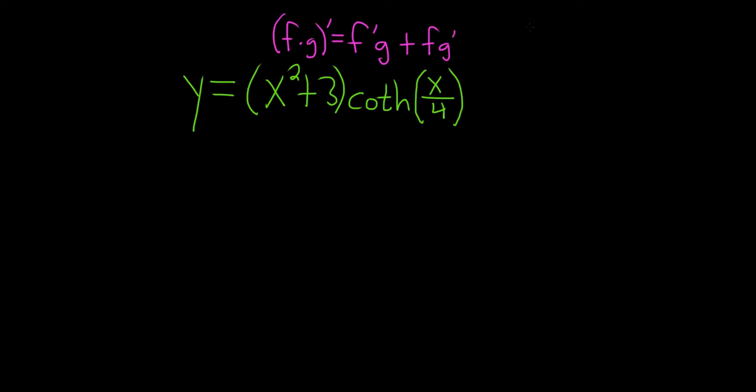Another formula we'll need in this problem is the formula for the derivative of the hyperbolic cotangent. The derivative of that is equal to negative hyperbolic cosecant squared.